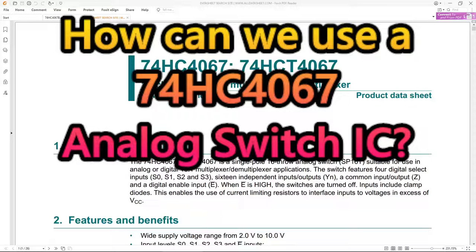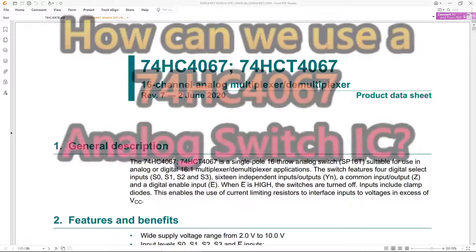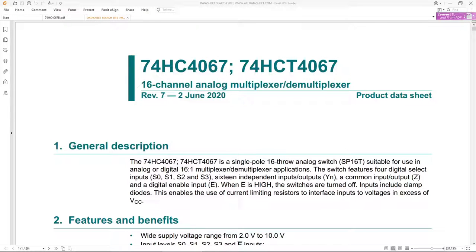Hi today I thought we would talk about the 74HC4067 IC CMOS IC that you can get. It is a 16 channel analog multiplexer demultiplexer, or as the general description says, it is a single pole 16 throw analog switch suitable for use in analog or digital applications.